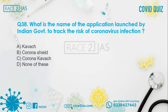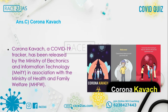Question number 38: What is the name of the application launched by the Indian government to track the risk of coronavirus infection? Option A: Coverage. Option B: Corona Shield. Option C: Corona Kavach. Option D: None of these. The right answer is Option C, Corona Kavach. Corona Kavach, a COVID-19 tracker, has been released by the Ministry of Electronics and Information Technology in association with the Ministry of Health and Family Welfare.